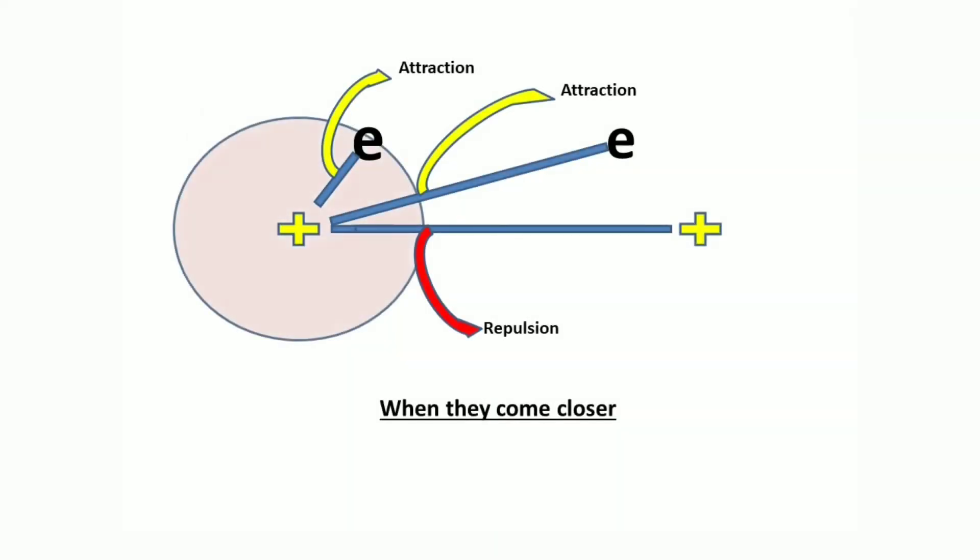The nucleus of one molecule will attract its own electrons and the other electrons too, but it will repulse the nucleus of the other molecule because of the same charge.